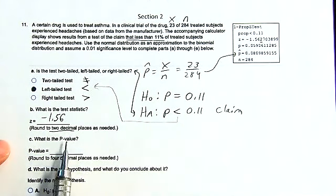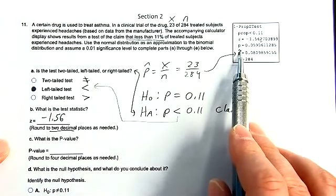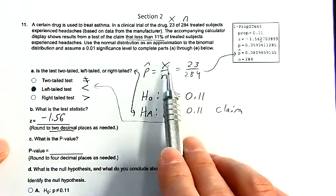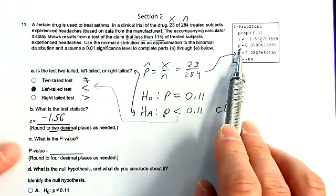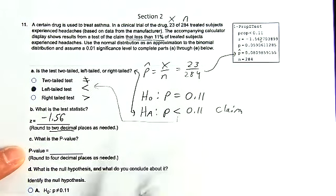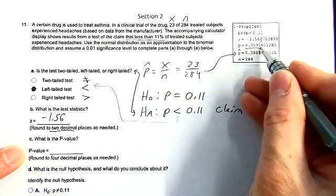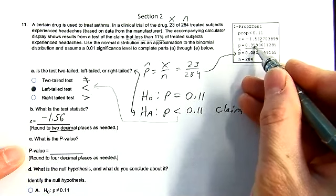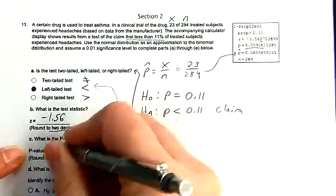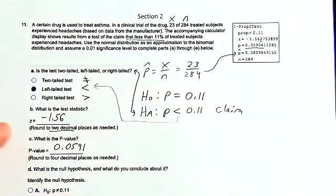What is the p-value? You have to be a little careful — they technically gave you two p's here. P-hat is the proportion of the sample. The p-value we want is 0.059, which to four decimals we'll call 0.0591.